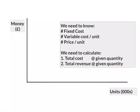To draw a chart you need to know the fixed cost, the variable cost per unit, and the price per unit. From these numbers you will calculate a total cost at a given quantity and a total revenue at a given quantity.